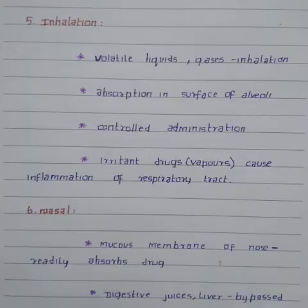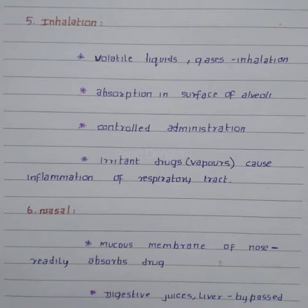The fifth route is inhalation. In this, volatile liquids or gases are inhaled and absorption occurs on the surface of the alveoli. When sufficient drug concentration is reached, it is expired from the alveoli, making this a controlled administration. If irritant vapors are present, they may cause inflammation of the respiratory tract.